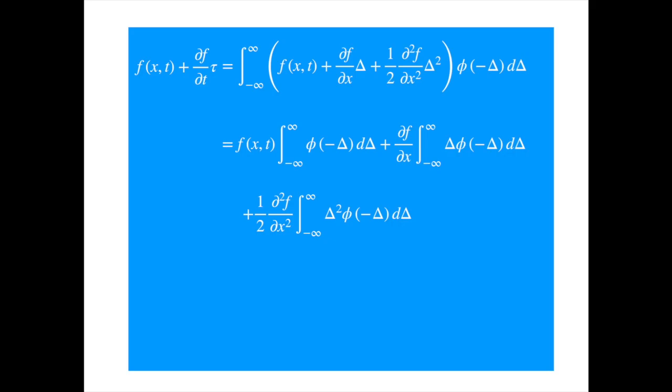Now as before the total probability is equal to 1, the first integral is equal to 1, but the probabilities of positive and negative shifts are not equal anymore because of the drift, and hence the second integral is no longer 0. So we get an extra term.